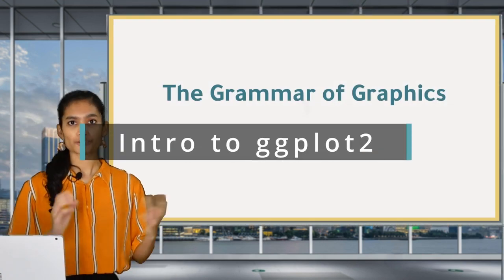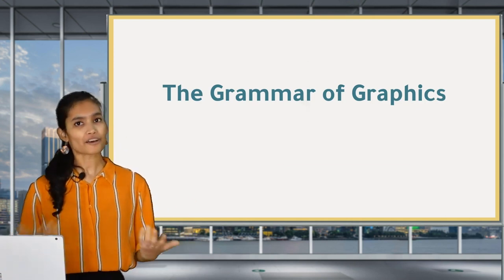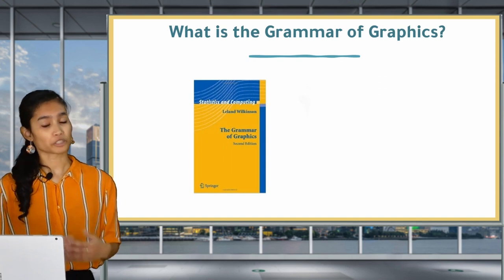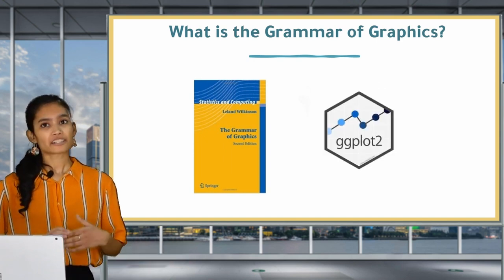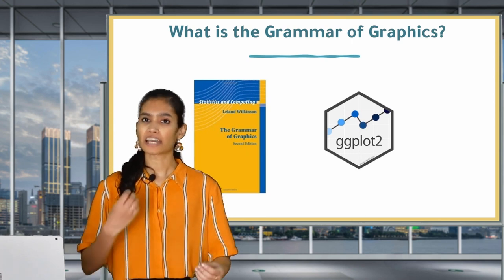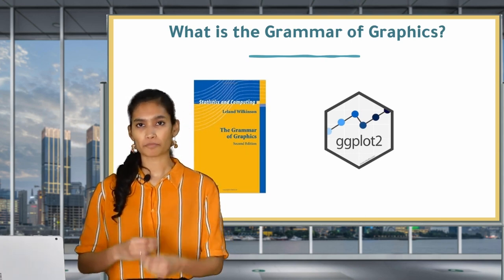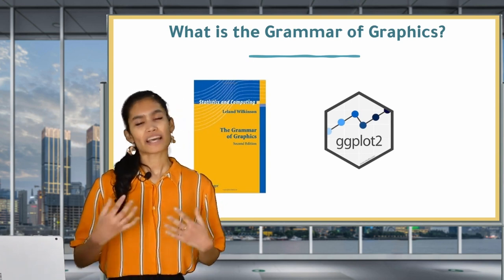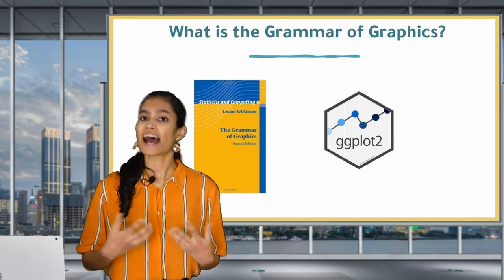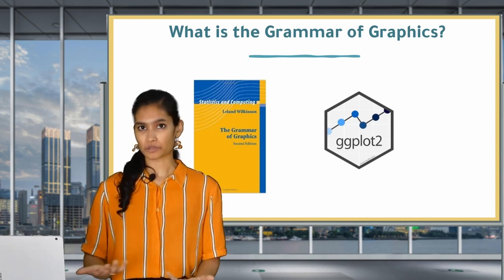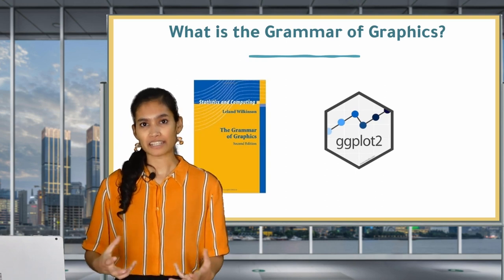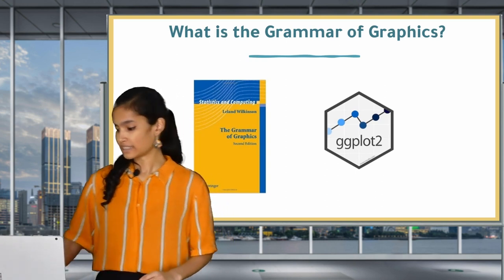The gg in ggplot2 is short for the grammar of graphics. But what is this grammar and how does it translate to R? The grammar of graphics is a theoretical framework that was first described by Leland Wilkinson in his book The Grammar of Graphics. The creators of ggplot2 based their code on this framework. Now think about how we construct and form sentences in written and spoken languages by using different components such as nouns, verbs, and adjectives. We can't just use them in any arbitrary order. There are rules for how to structure them. For example, I can say I am Joy, but I can't say Joy I am. That is linguistically incorrect.